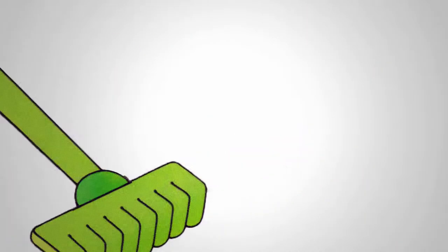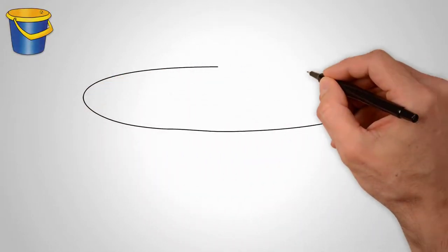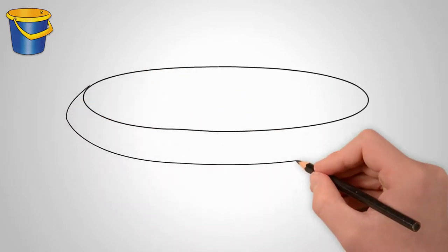And now let's draw a bucket. It can carry water and liquids. First, draw two parallel ovals. This will be the top of the bucket.